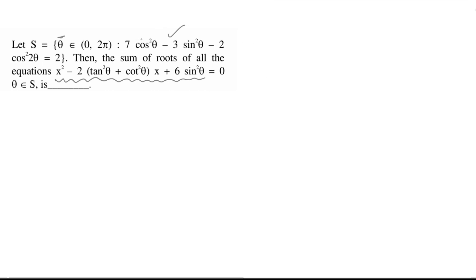Toh yahan se sabse pehla kaam karte hain. Simplicity ke liye, jo cosθ given hai isko 'c' likhenge aur sinθ ko 's' likhenge. Given equation ko aise likhte hain: 7c² - 3s² - 2c2² = 2. Further trigonometric equation ko cos2θ ke form mein represent karte hain.